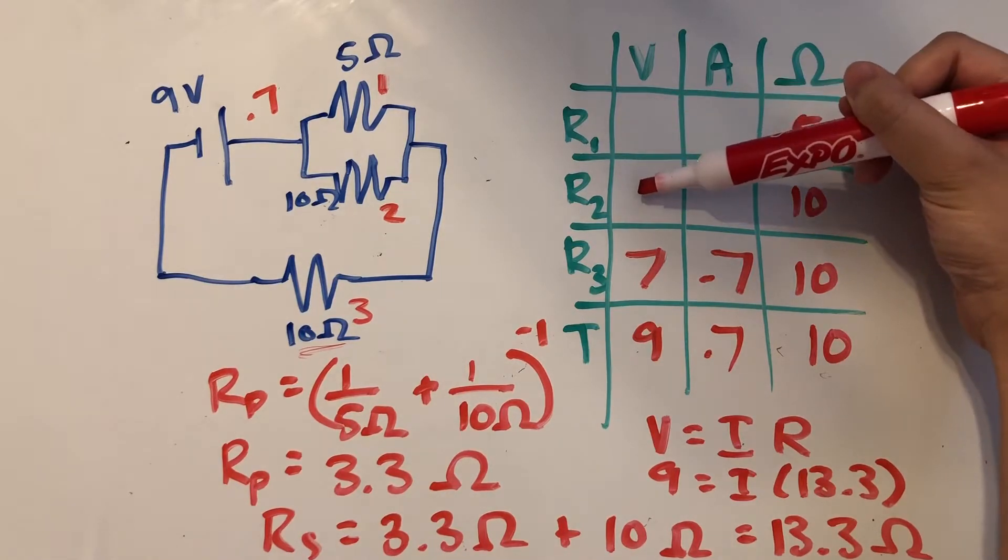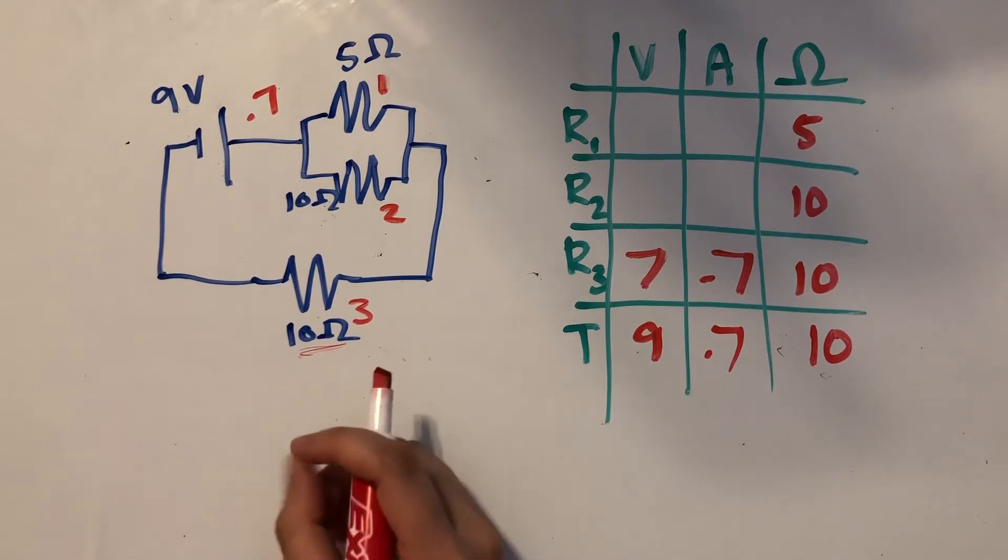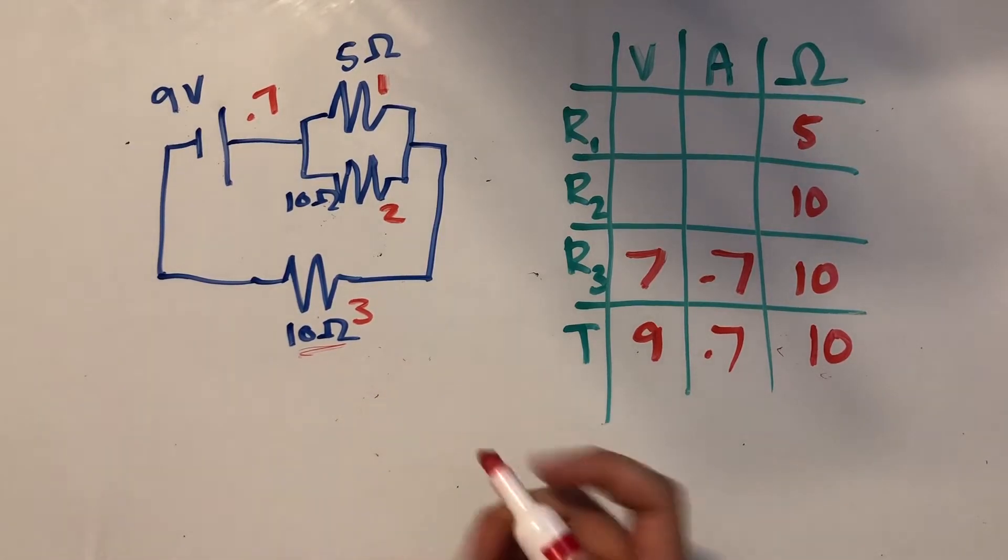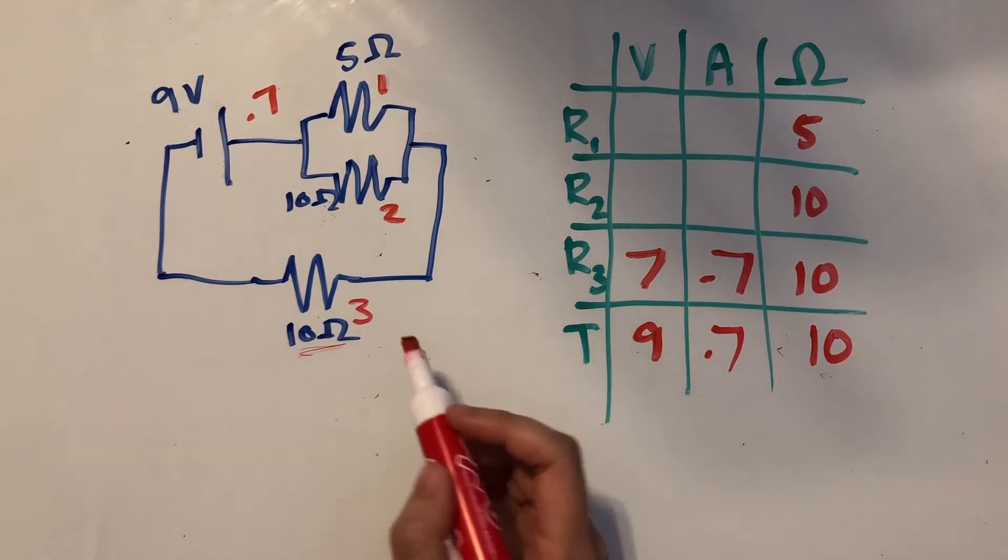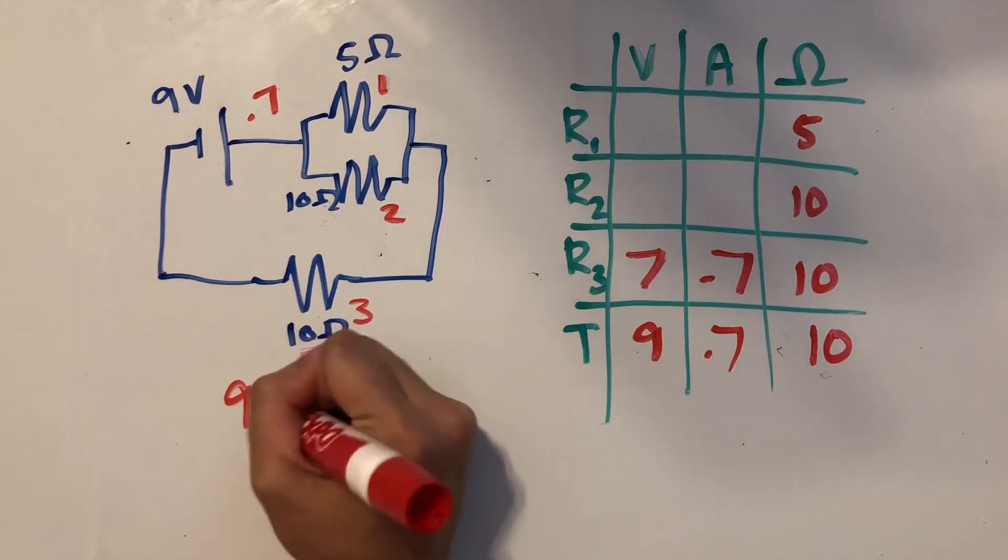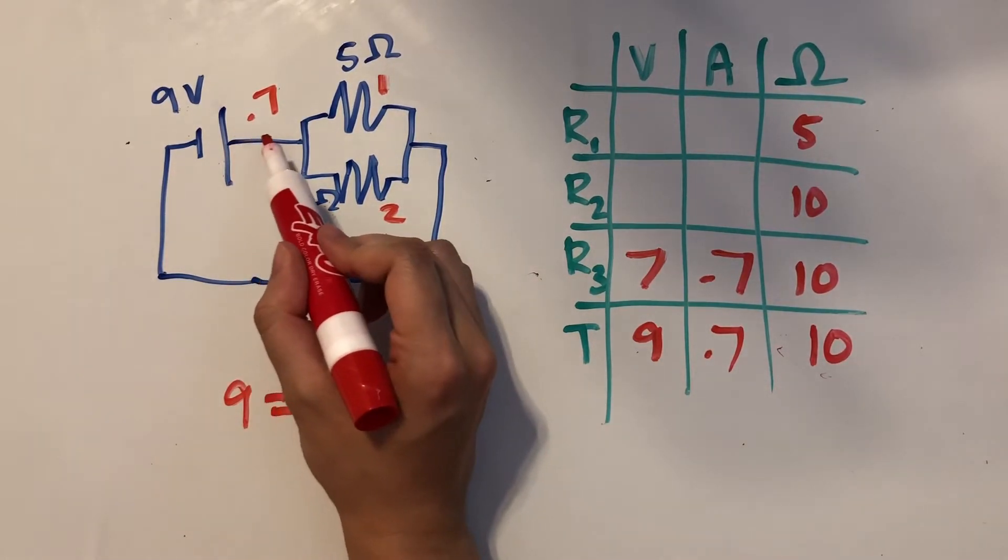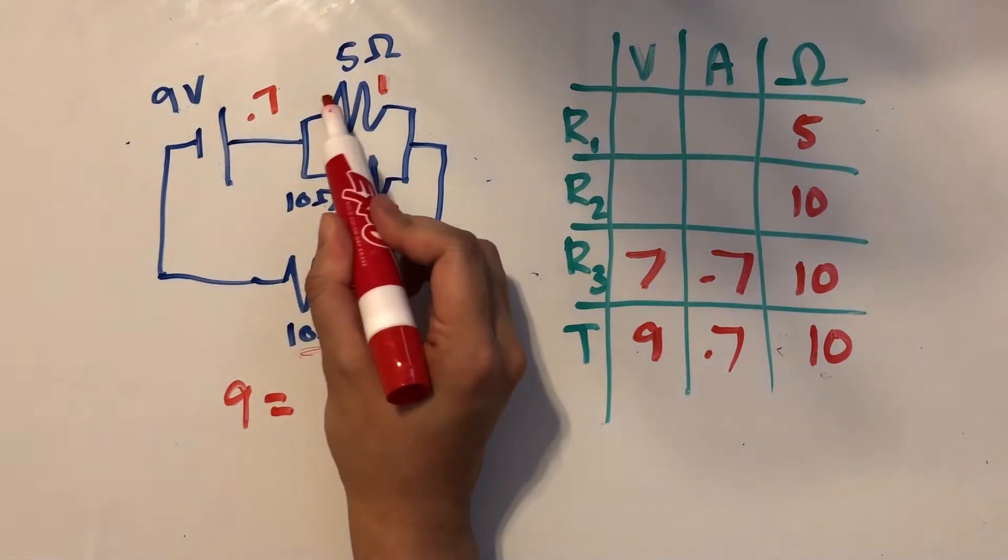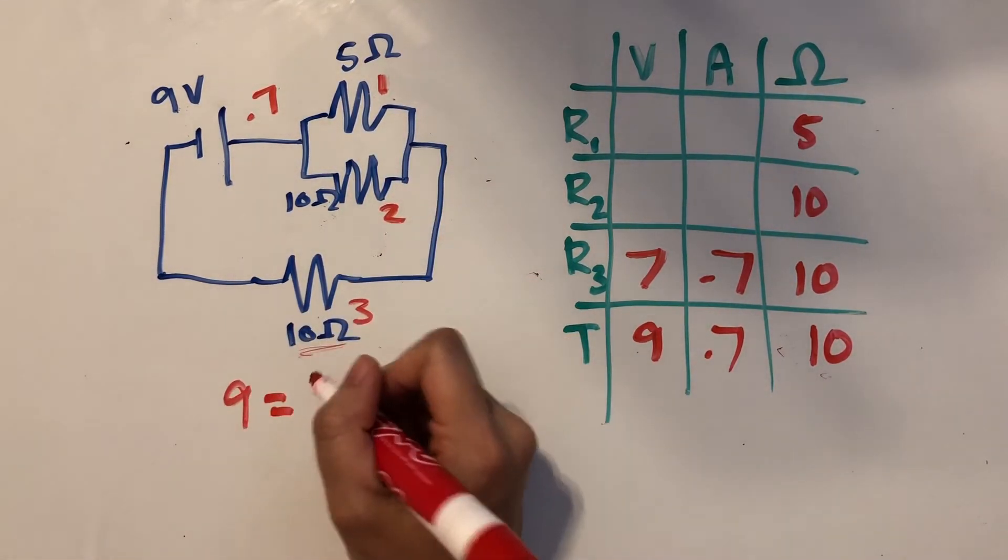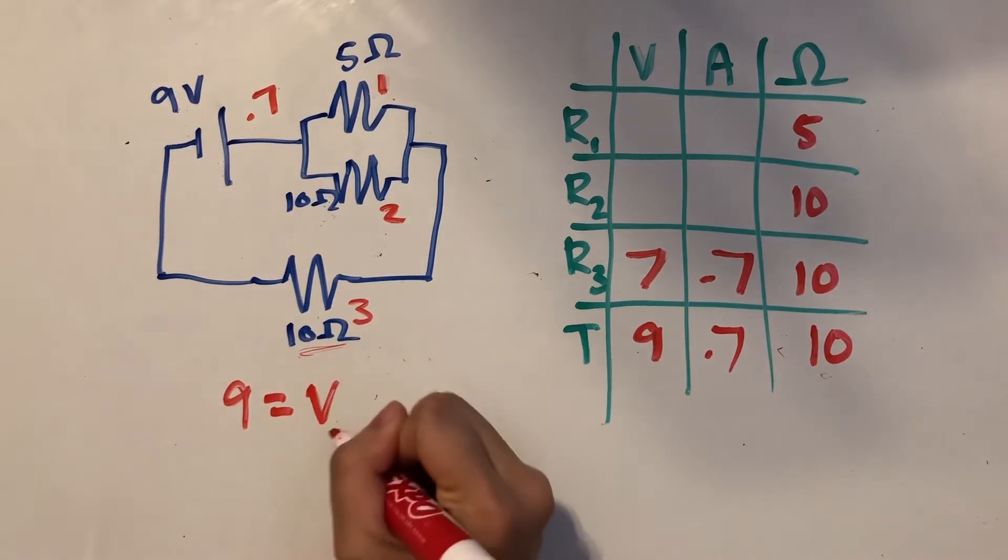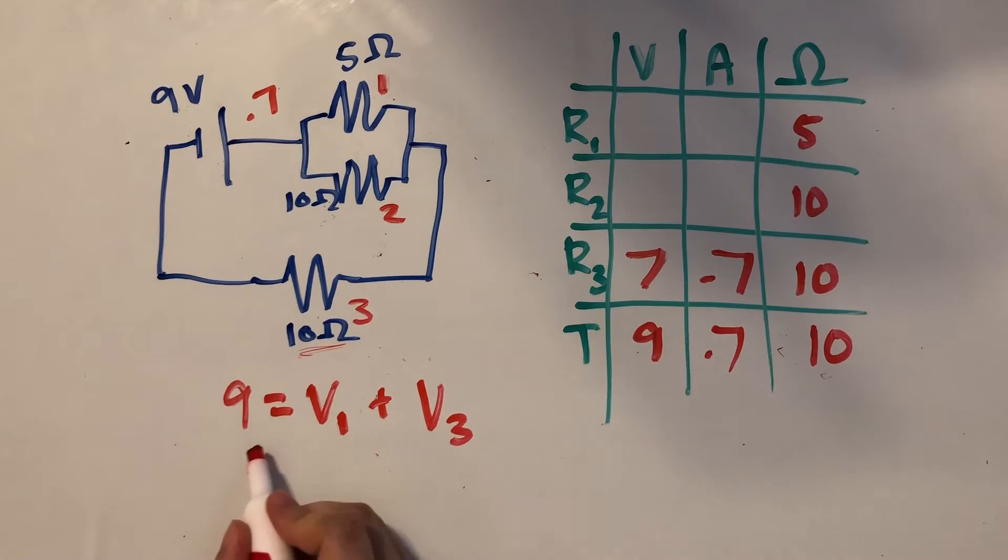So remember that one of the ways we can state Kirchhoff's loop rule is that the total voltage is equal to the constituent voltages of the loop. So the total voltage we have is 9 volts, and that should be equal to the voltages of one loop. So our first loop would be going through voltage or resistor 1 and resistor 3. So the voltage at resistor 1 plus the voltage at resistor 3 should equal 9 volts.